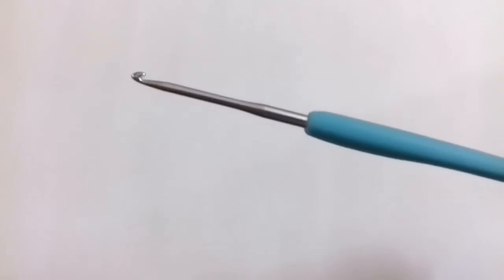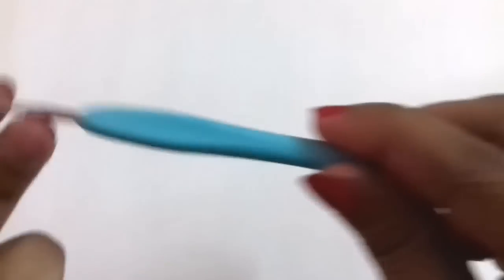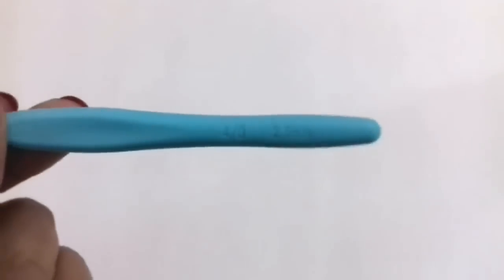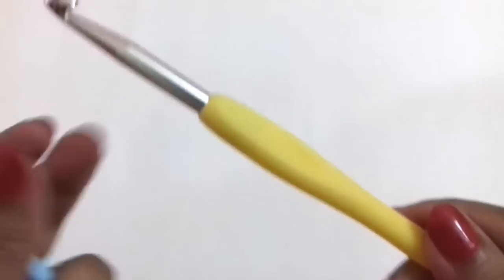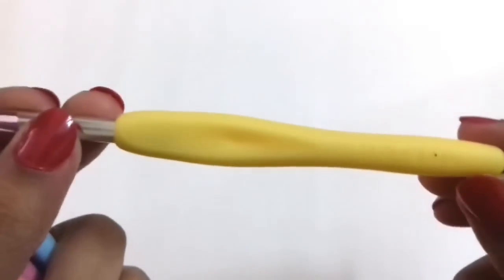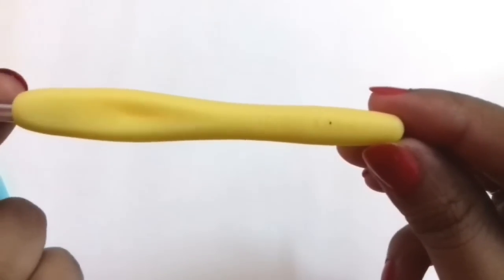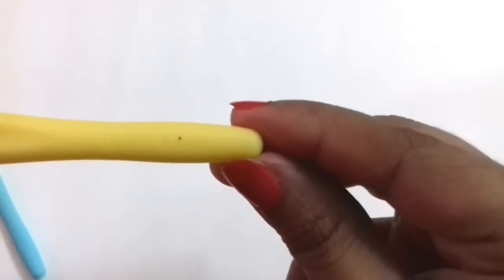This is 2.5 mm crochet hook, number 4, and this is very difficult to see without the numbers. This is the biggest crochet hook and this is of size 6 mm, number 10.